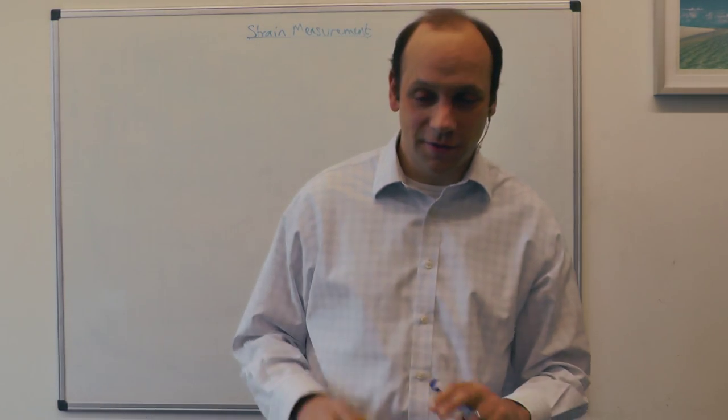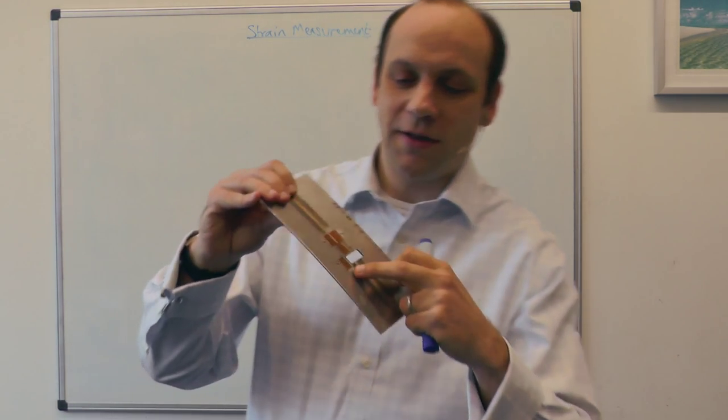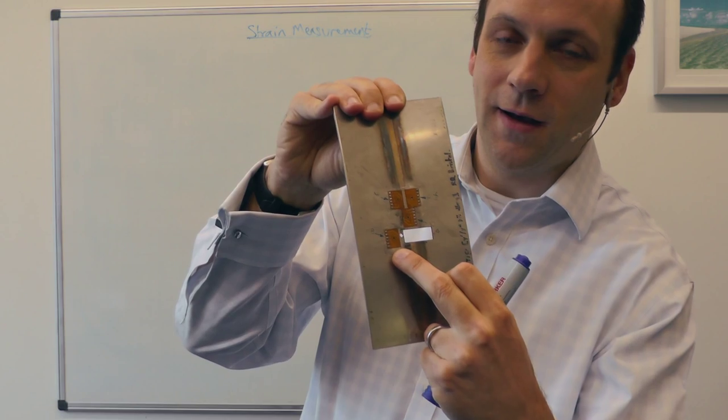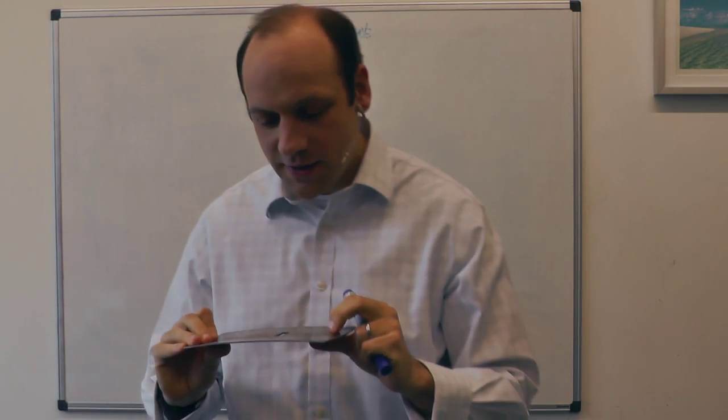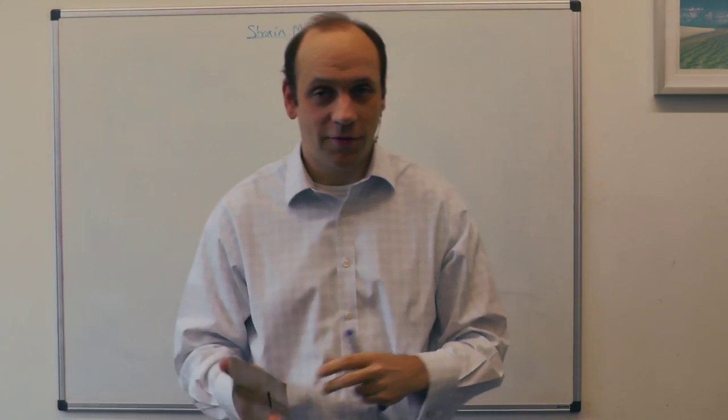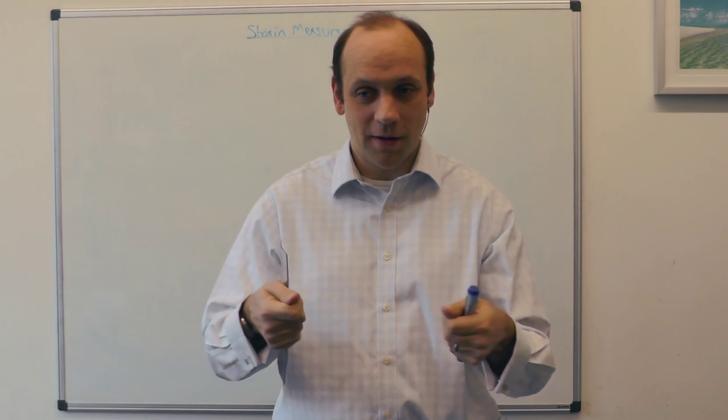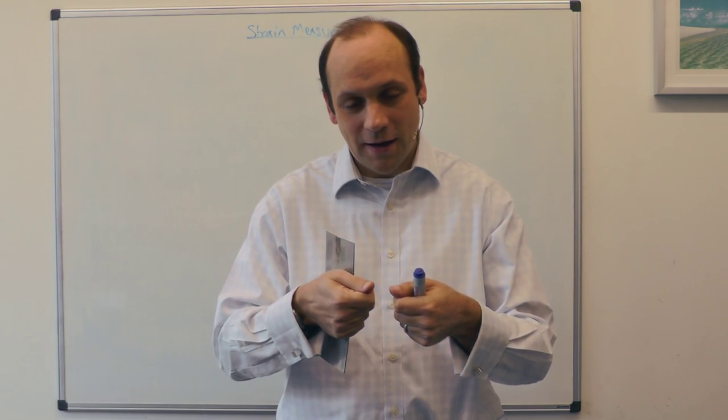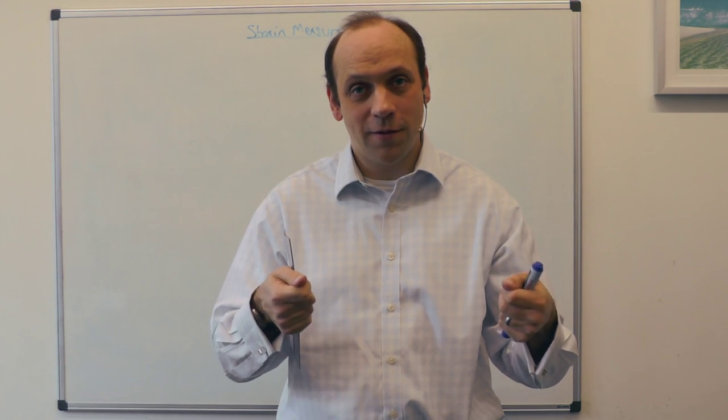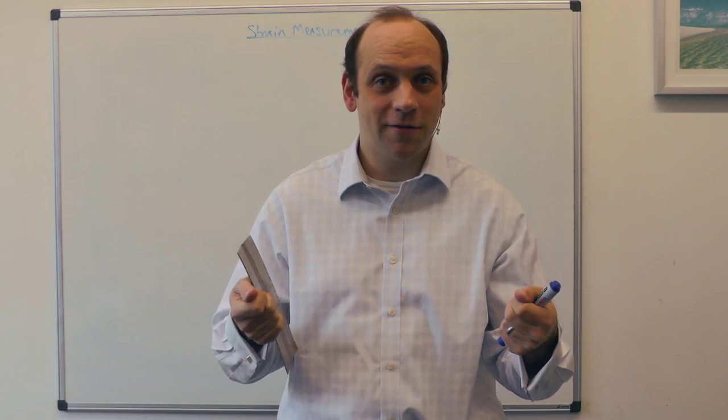One is you can bond on a strain gauge onto the sample, here are some of these little orange things on here, and what they do is they have little foils, it's a little plastic foil with a copper grid laid on it, and as you stretch the copper grid it gets longer and thinner, so its resistivity increases, so you can use that as a way of measuring strain.